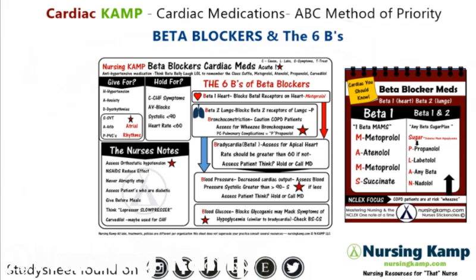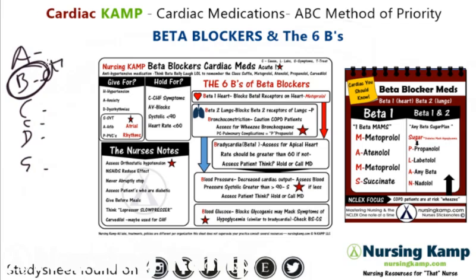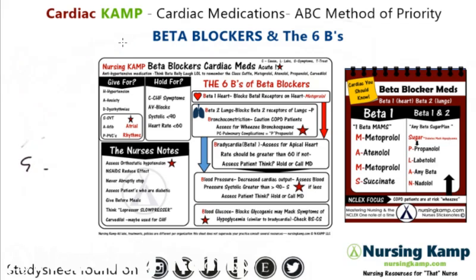These are for my cardiac A, B, C, D, and E's. This is the second portion of a previous lecture where I talk about cardiac medications in order of priority based on those A, B, C, D, E's. Beta blockers are second in line and the most acute of these medications. Beta blockers are given for hypertension, anxiety, dysrhythmias, and mainly for CHF symptoms. We question these medications because there are six B's of beta blockers — six things we look at when evaluating them.